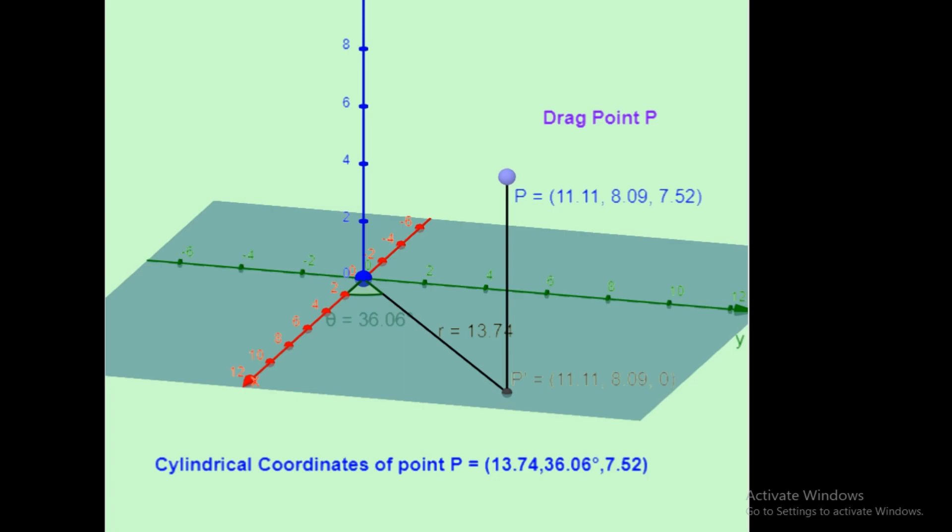This is a good software to visualize the cylindrical coordinate system. We are given three parameters: the first is the radius, the second is the angle phi, and the third is the z-height — to move anywhere in the space. Let me demonstrate by varying these three parameters.